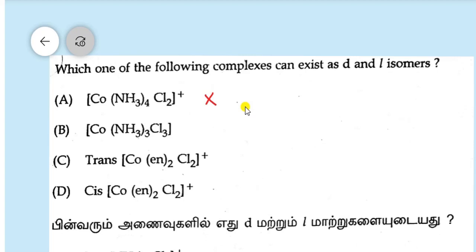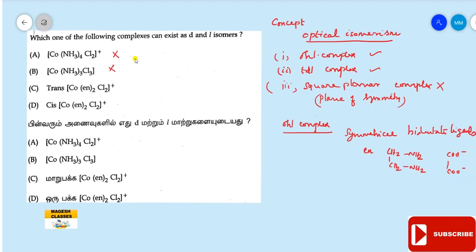Options C and D are having bidentate ligands, that is EN is present, so the answer may be C or D. Okay, then the condition for optical isomerism is that the complex should be chiral and have mirror image relationship.